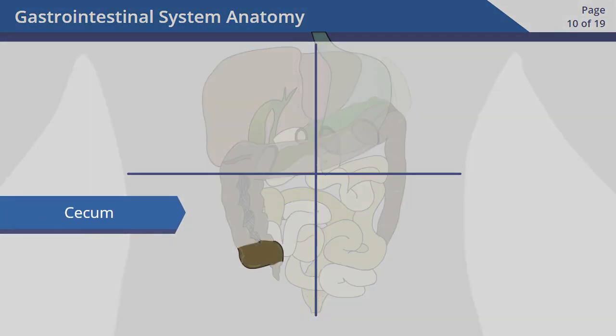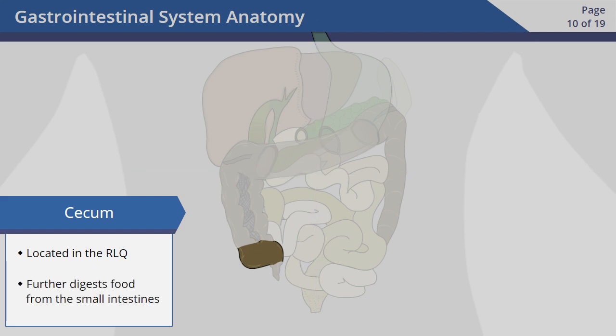The cecum is found at the first part of the large intestines. It connects the small intestines to the colon. Located in the right lower quadrant, the cecum further digests food from the small intestines.